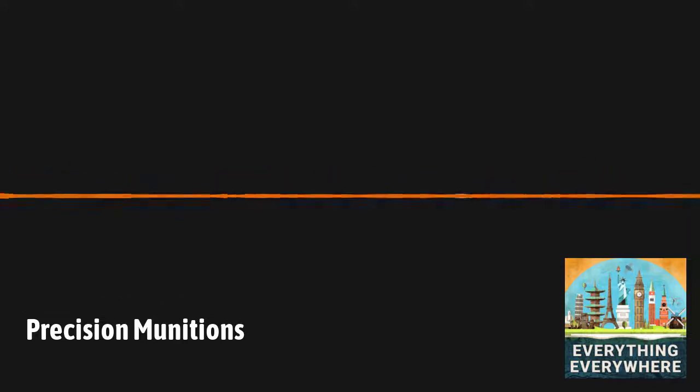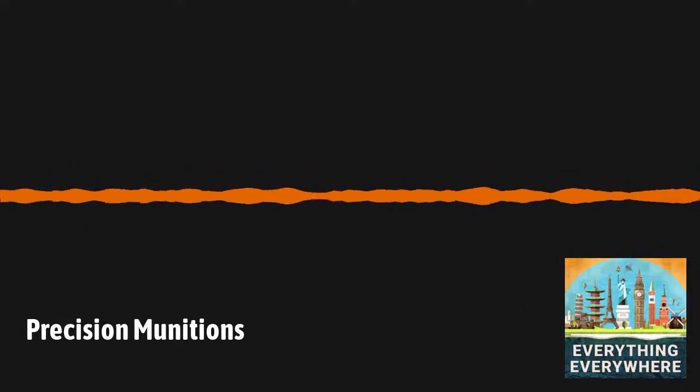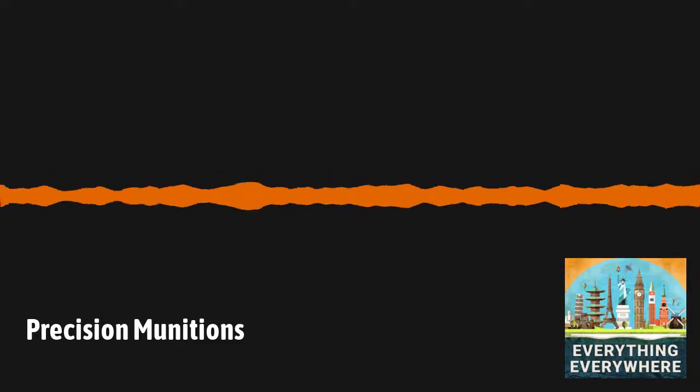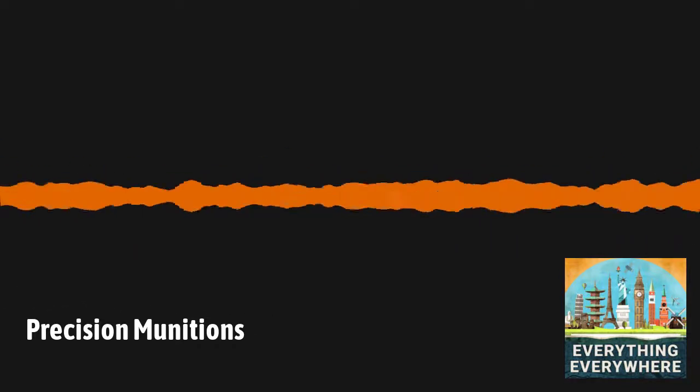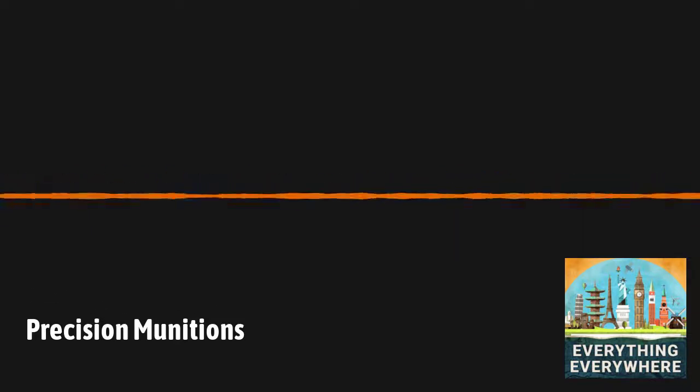This problem was solved with the development of satellite-guided munitions. Satellite-guided bombs, like the U.S. Joint Direct Attack Munition, or JDAM, can be used in any weather condition. They use GPS systems to find their target. It's a system that is designed to be attached at both the nose and the tail to standard dumb bombs.